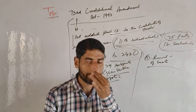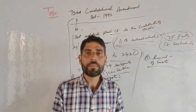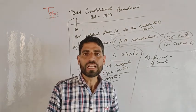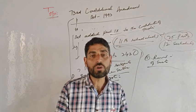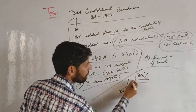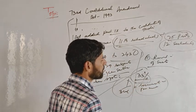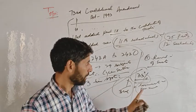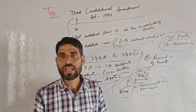Another important feature is the reservation of seats. The act provides for reservation of seats for Scheduled Castes and Scheduled Tribes in every panchayat at all three levels, in proportion to their population relative to the total population in the panchayat area. The act also provides 33 percent reservation for women in every panchayat.